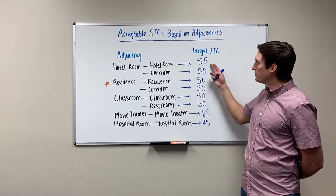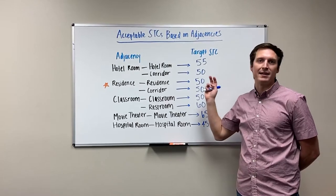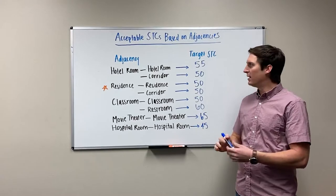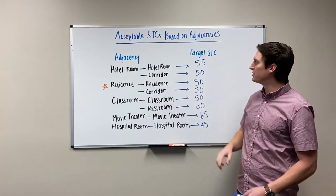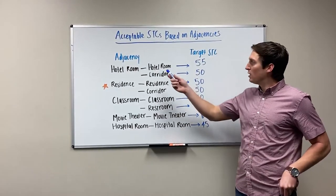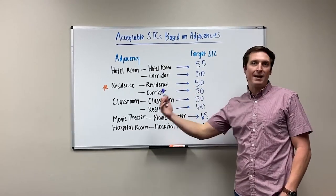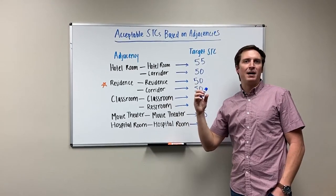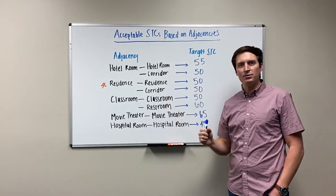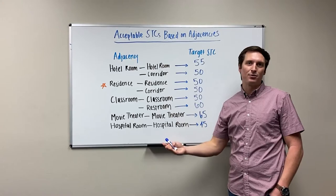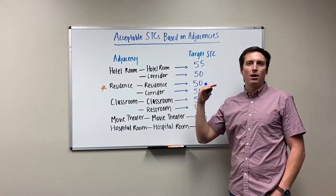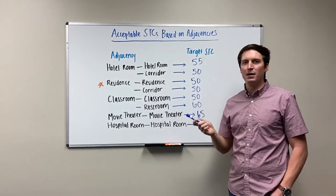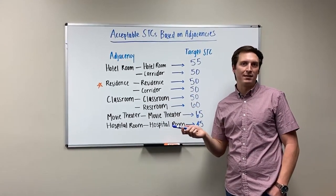For hotel rooms, the hospitality chains are generally driven by brand standards — it's not a building code requirement, but something the hotel wants to achieve. For a hotel room to hotel room, you want to hit a 55 or higher. Hotel room to corridor has a lot of traffic, but that's generally limited by the door into the space, so if the door is only blocking 35, there's really no reason to make your corridor wall a 60 or higher.